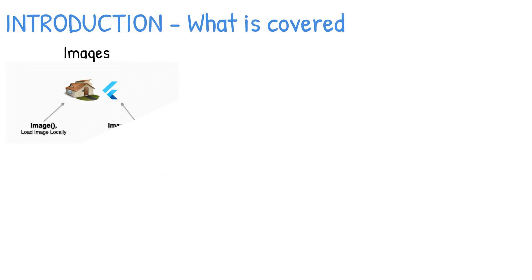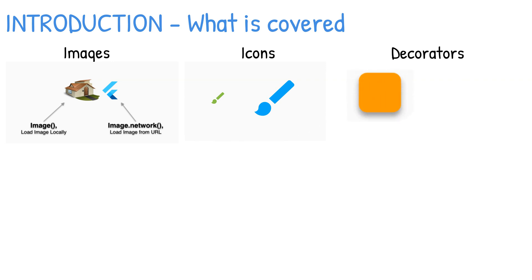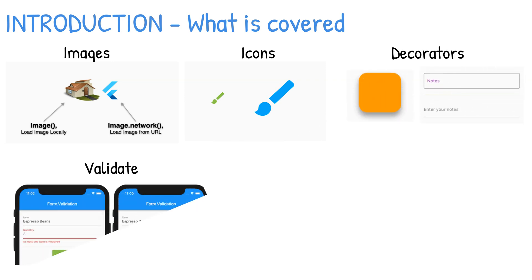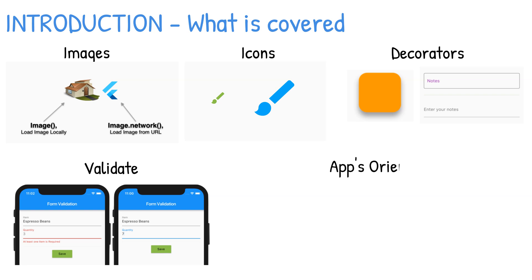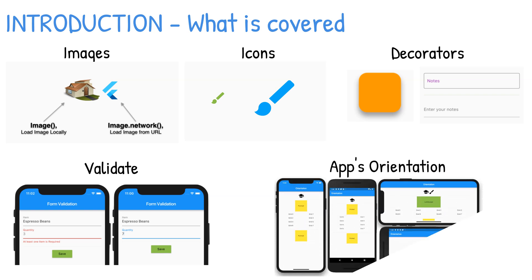In this video, you're going to take a look at ways to include images, icons, and decorators, how to use text field widgets to retrieve, validate, and manipulate data, and how to check for your app's orientation.